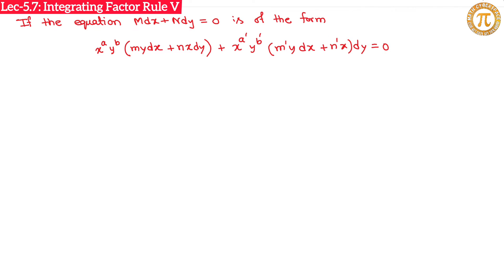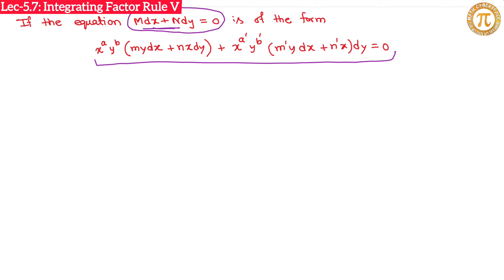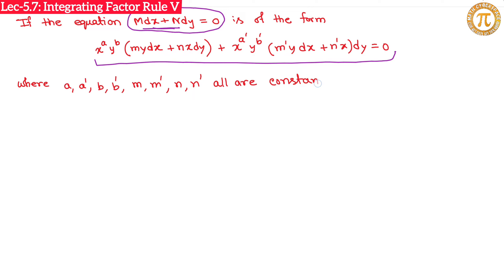So if you have a first-order ordinary differential equation M dx + N dy = 0, and this equation is in the form x^a y^b, where the numbers a, b, a', b', m, m', n, n' are all constants, then you have to convert the equation into this form to get the values of these constants.